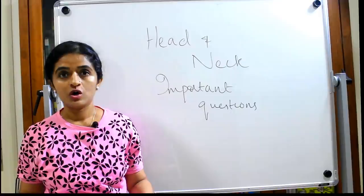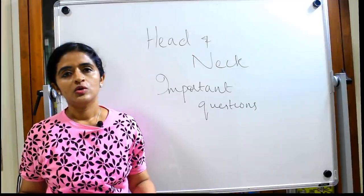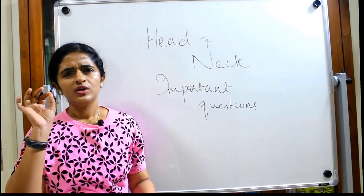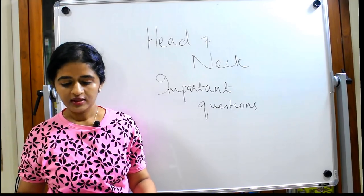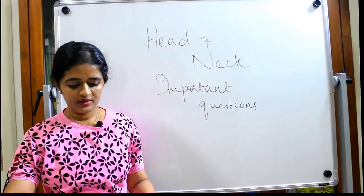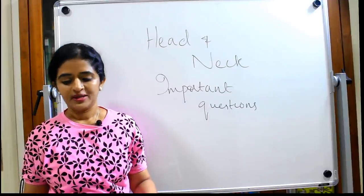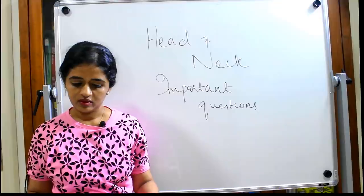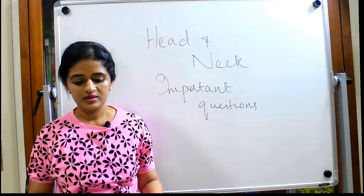Some important short notes to expect: facial muscles — expressions are caused by facial muscles, so you need to know five or six important expressions and which muscles are related to each. Among facial muscles, you need to know orbicularis oculi, orbicularis oris, and buccinator in detail — these three can each be asked as a short note. Also know the nerve supply and blood supply of the face, both sensory and motor.